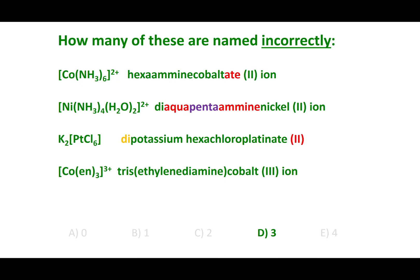Three of them were named incorrectly. The first one has a cation complex ion, and a cation does not cause the metal to get the -ate suffix — so cross that out. Remember, only when the complex ion is an anion does it get the -ate suffix. In the second compound, there are two mistakes: first, there are four amines, so the prefix should be tetra, not penta. Second, the alphabetical order is off — amine (AM) should come before aqua (AQ). The correct name should be tetraamine diaqua nickel(II) ion.